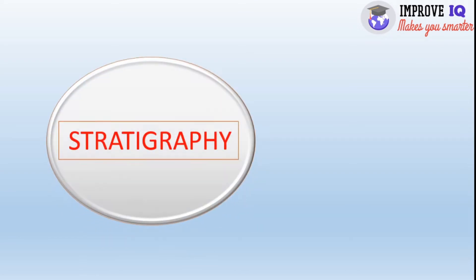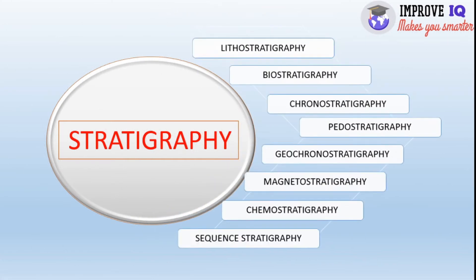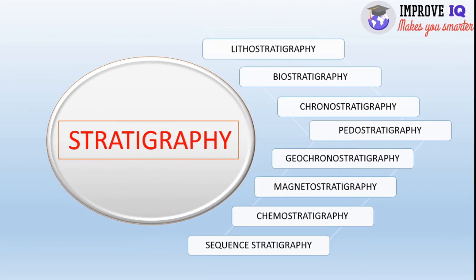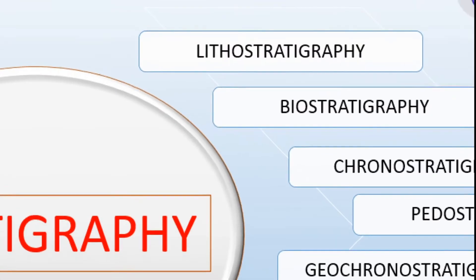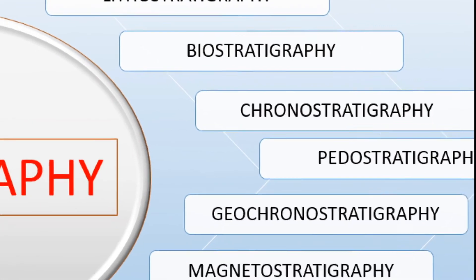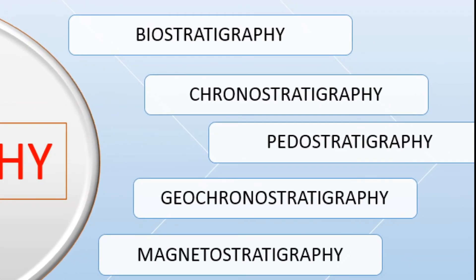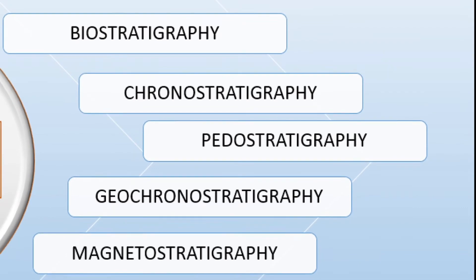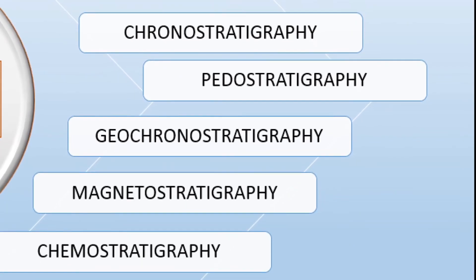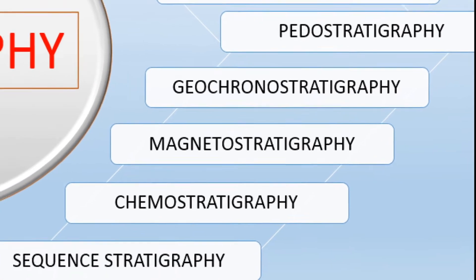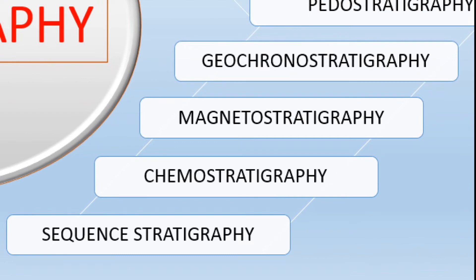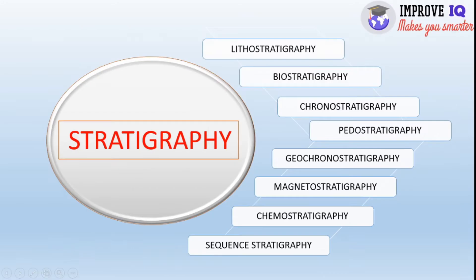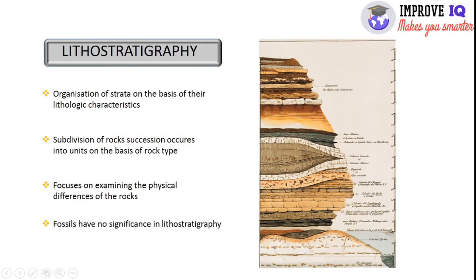Next, we are going to know what are the types of stratigraphy. In geology, stratigraphy has been divided into these types: lithostratigraphy, biostratigraphy, chronostratigraphy, pedostratigraphy, geochronostratigraphy, magnetostratigraphy, chemostratigraphy, and sequence stratigraphy.